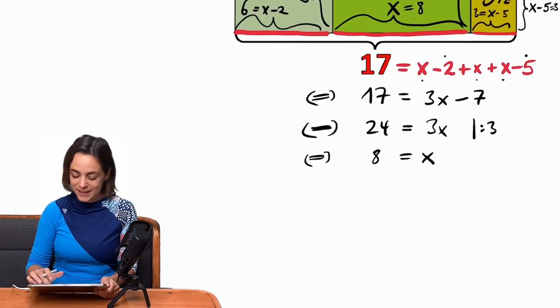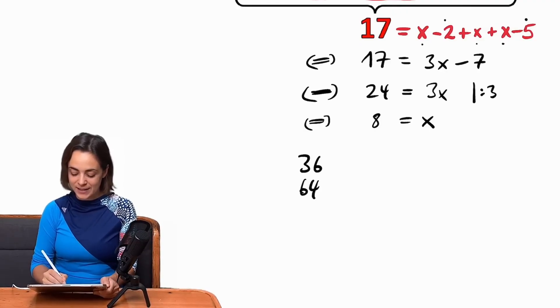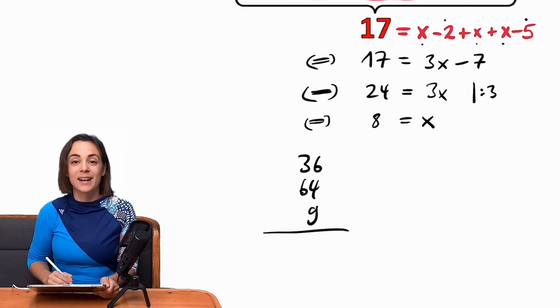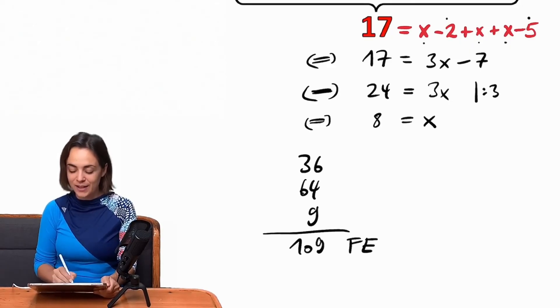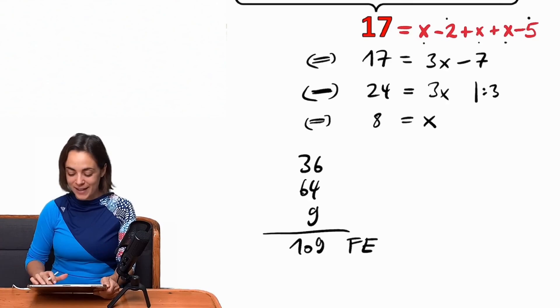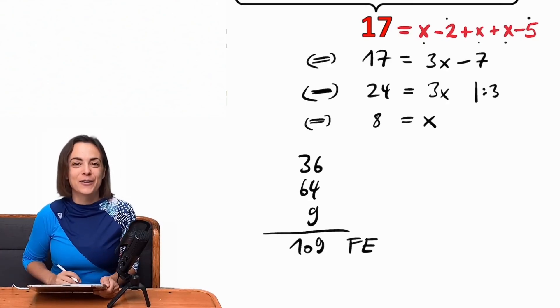And in total, this is easy now, we have to add 36, 64 and 9, and that makes 109 area units. So in total, our figure comprising 3 squares has 109 area units.